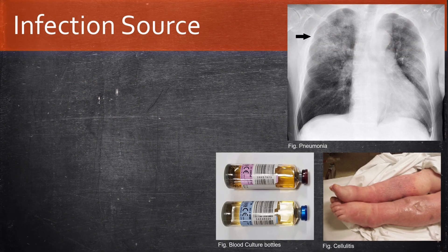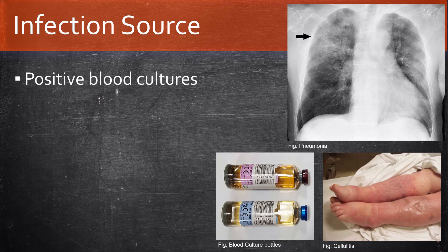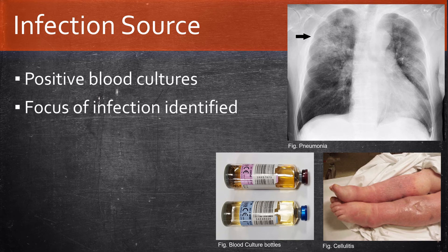Now combined with SIRS you also need an infection source. This can be from any source — from positive blood cultures, x-ray showing infection, cellulitis, or abdominal or urinary sources.